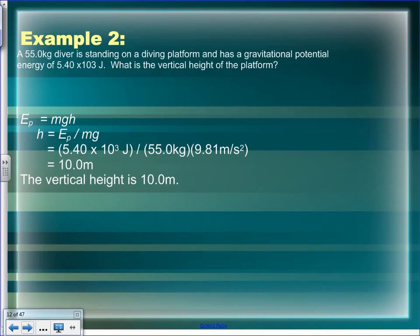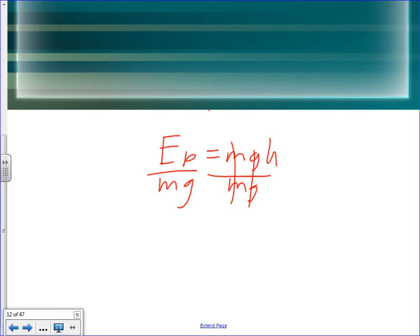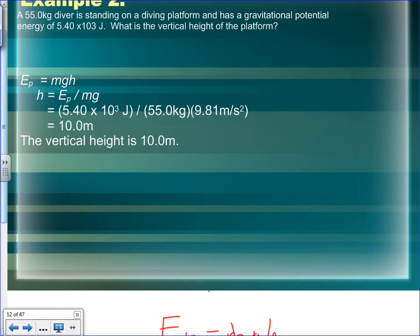Second example: a 55 kg diver standing on a platform has 5,400 joules of energy. Find the height of the platform. EP = mgh, so h = EP ÷ (m × g) = 5,400 ÷ (55 × 9.81) = 10 meters. That's the 10-meter diving platform. EP = mgh is really easy to manipulate — if you want any one term, divide by the other two.